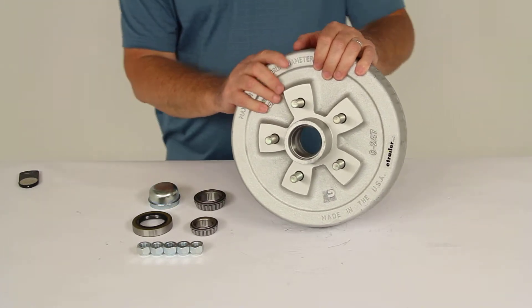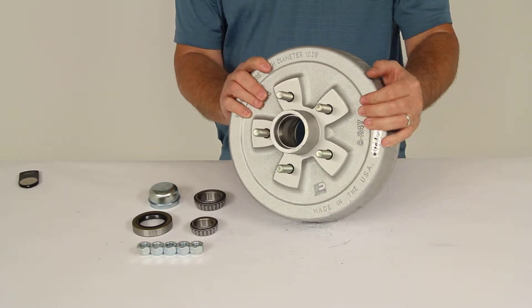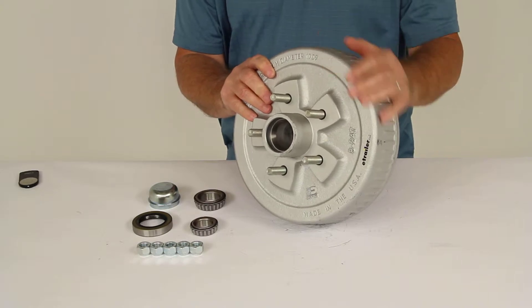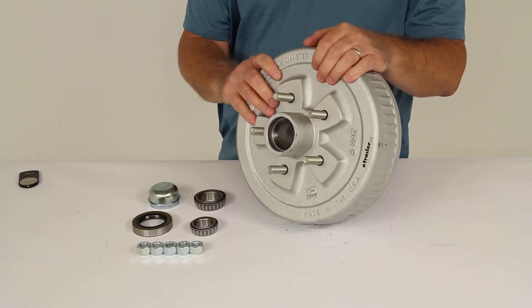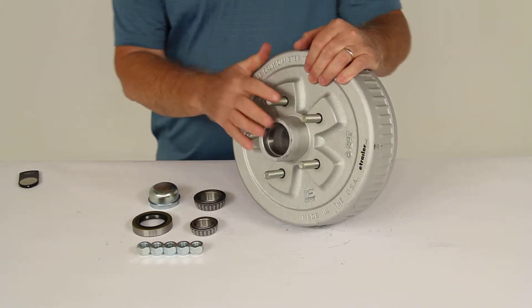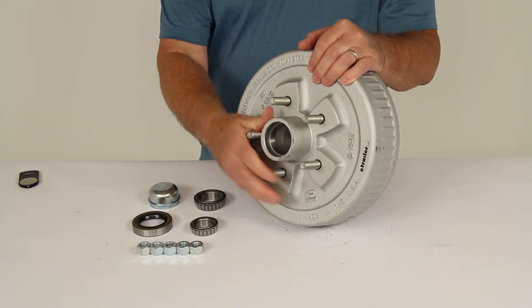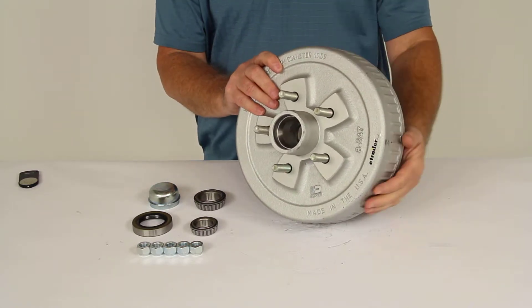Now all of the Galdex hubs and drums will undergo a test in which they are sprayed with a 5% salt solution, and this will help determine the corrosion resistance over time. So these products are able to withstand 500 hours of constant exposure to the saltwater mist.